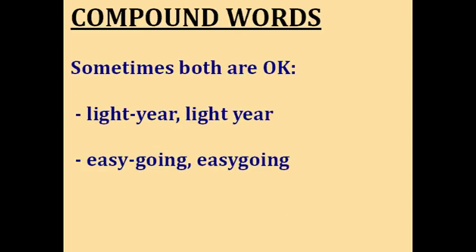Some words have more than one form. For some words, both the open form and the hyphenated forms are acceptable, as in the word light year — that's the distance that light can travel in a year. And for some words, both the hyphenated and the closed form are acceptable, as in the word easygoing, which means relaxed.